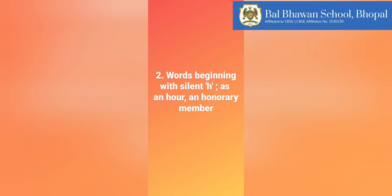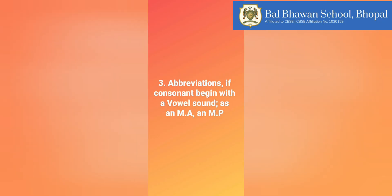We also use 'an' before abbreviations if the abbreviation begins with a consonant but has a vowel sound — for example, an MA, an MP. However, we use 'a' for abbreviations like a PhD, a BA, where 'an' would not be used.